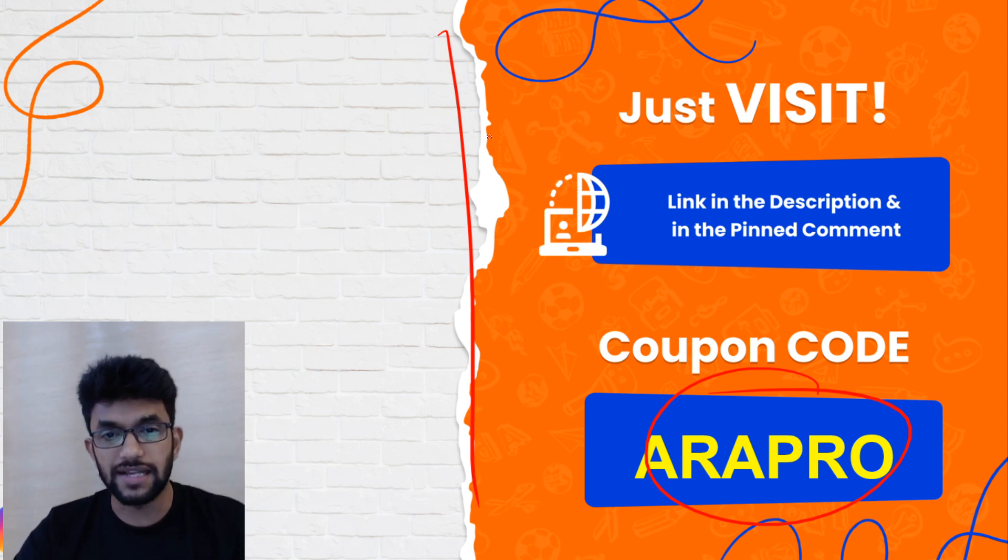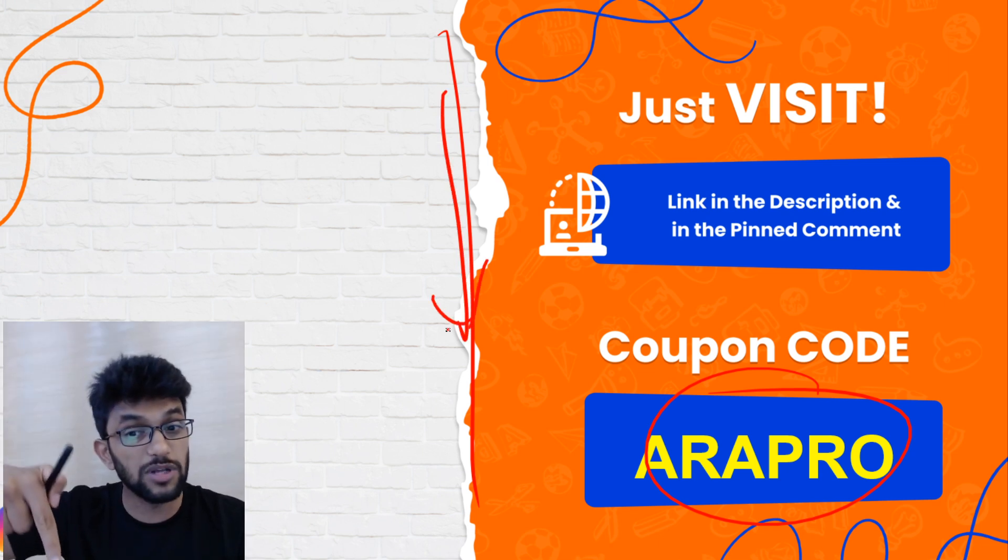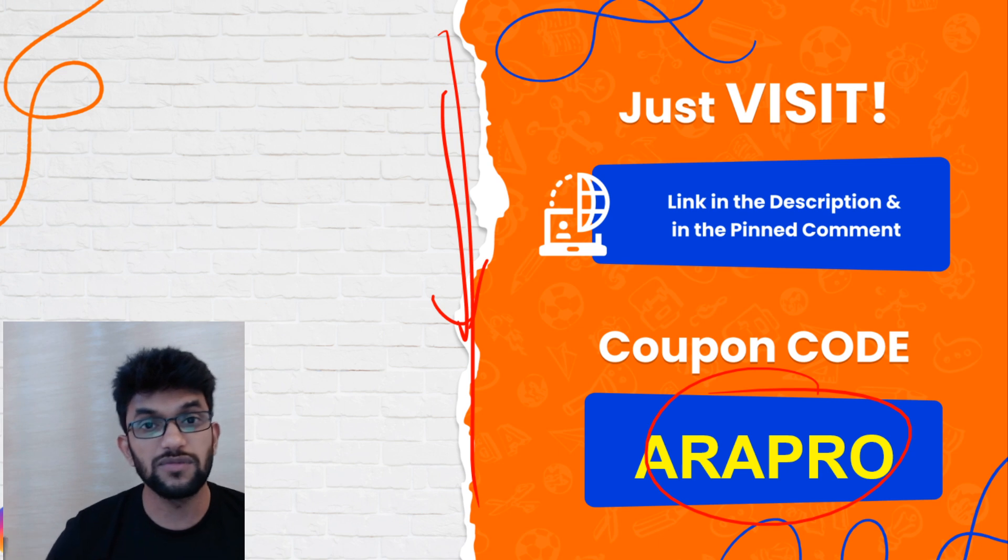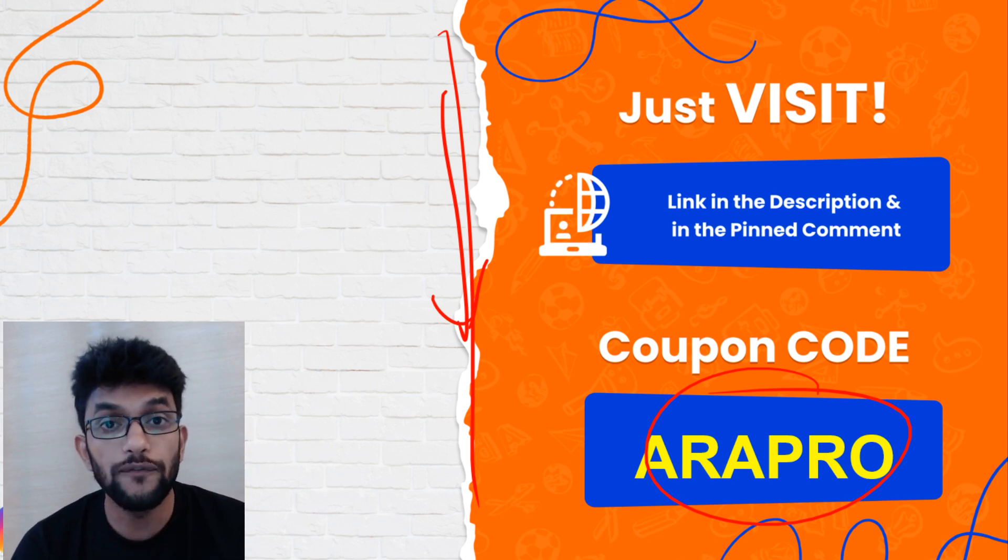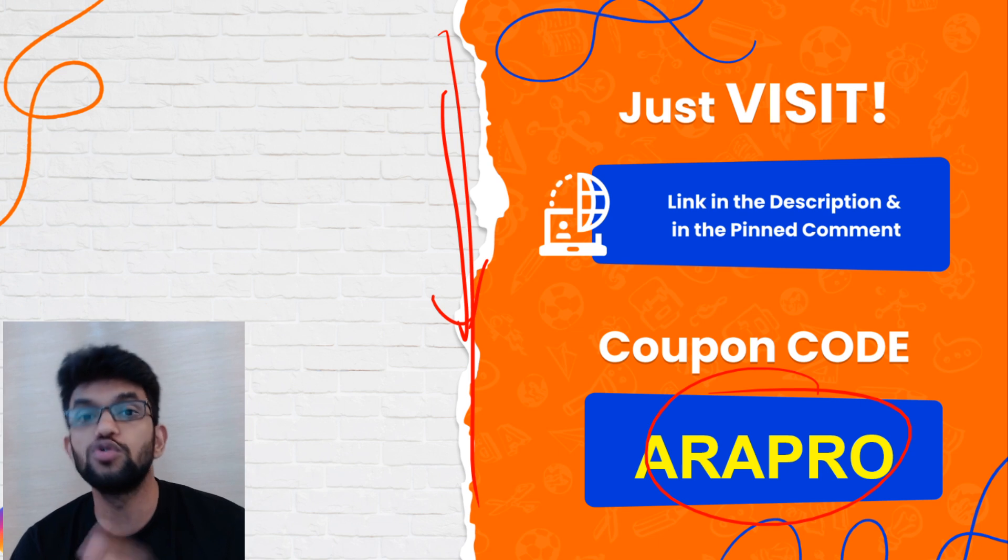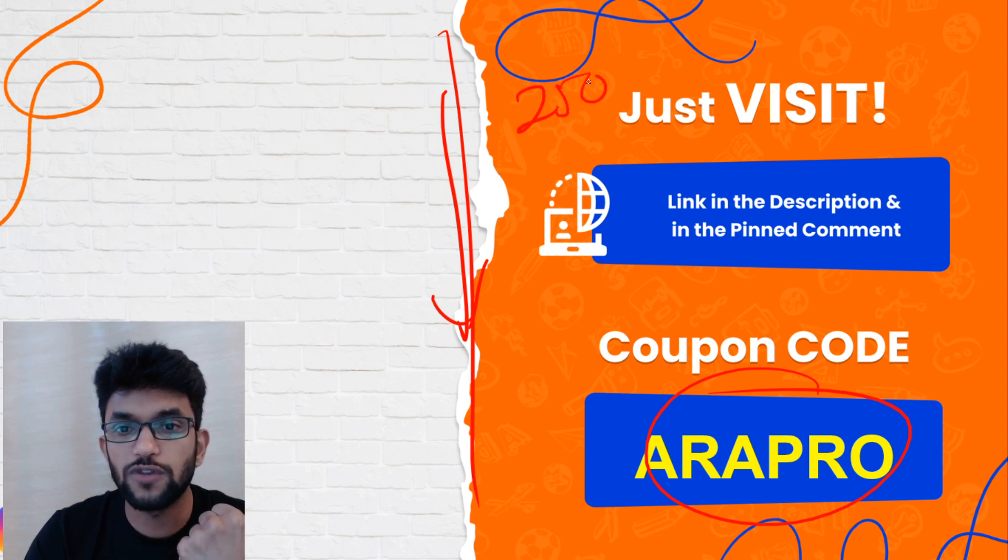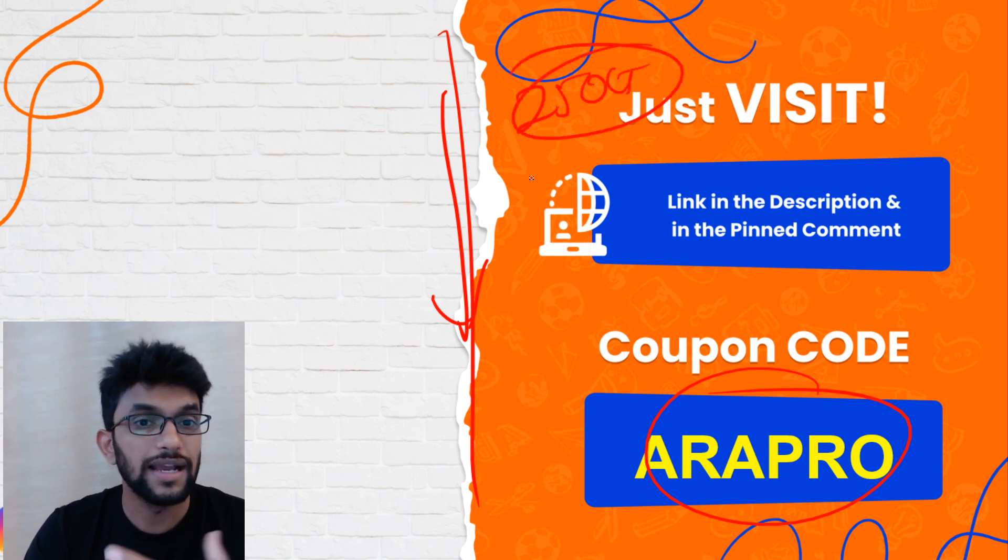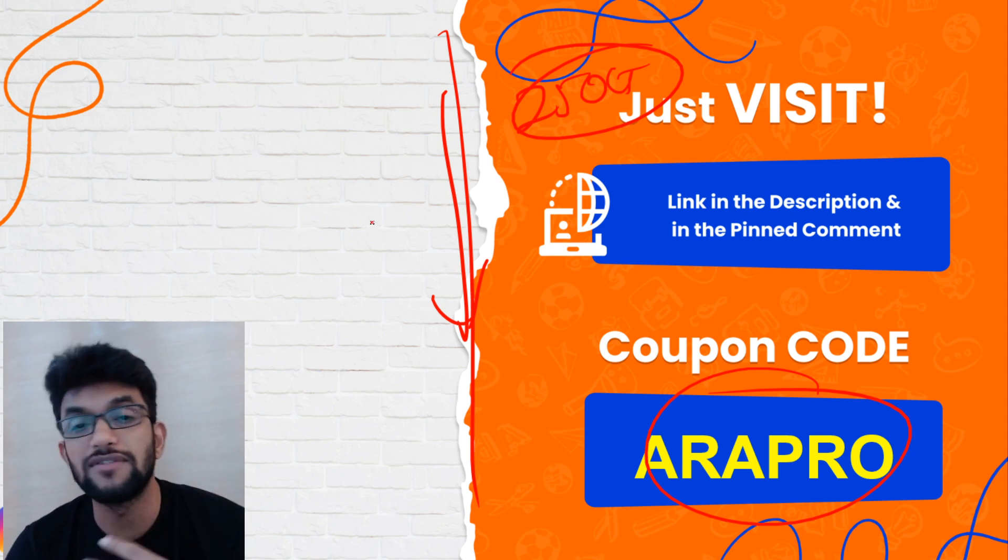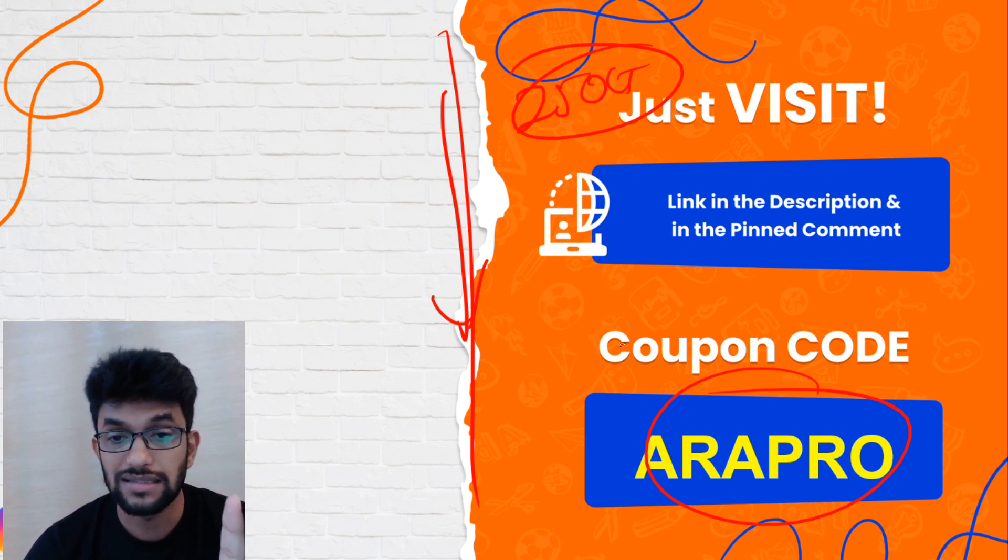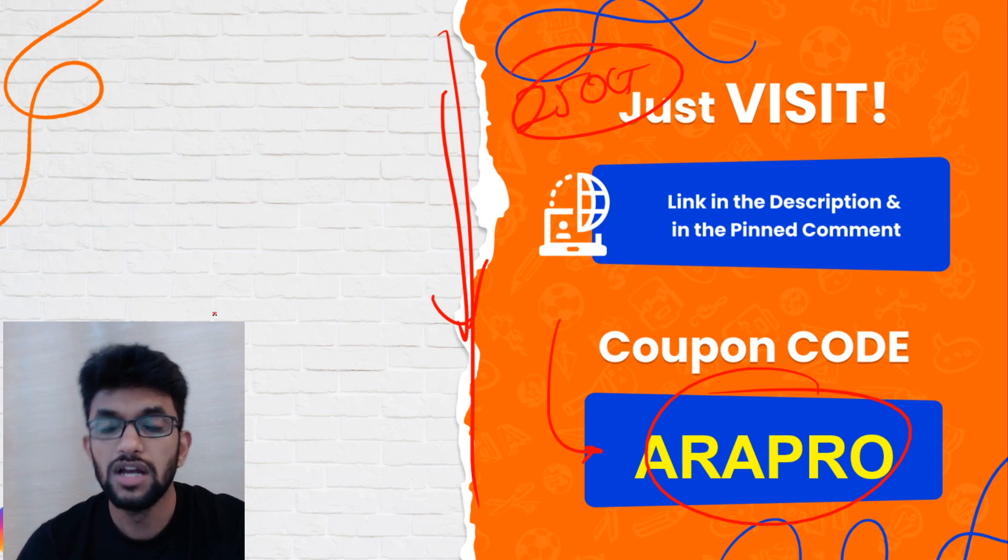Those of you who are interested, there's a link in the description box. You will find Term 1 course and Term 1 plus Term 2 course. Kids who just want to do Term 1 course can enroll in that. Those who want to do Term 1 plus Term 2 can enroll in that also. There are many classes. The last batch started on 25th of October - it's a crash course, I guess 4-5 classes. You can watch the replay at 1.5 or 2 times speed so you can finish it. Make maximum use of all these things and excel in the exam. You can use the code ARAPRO.